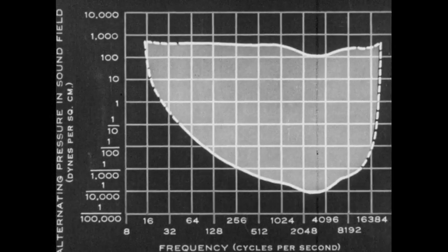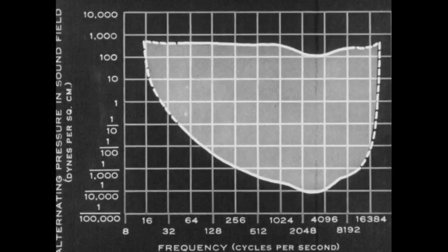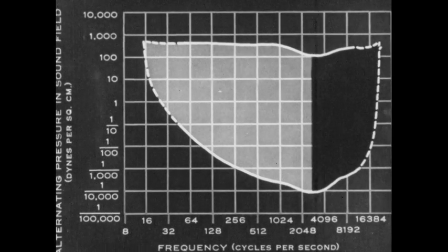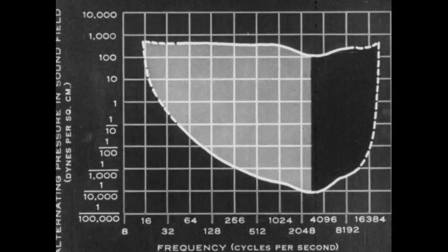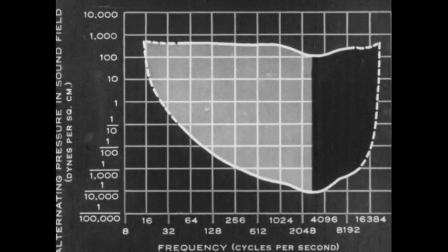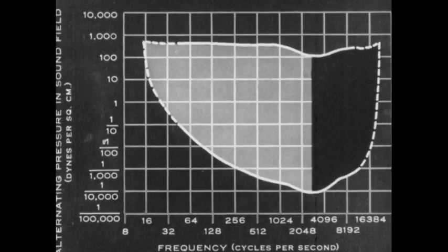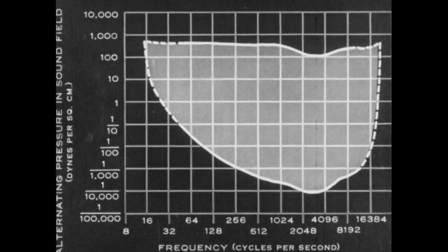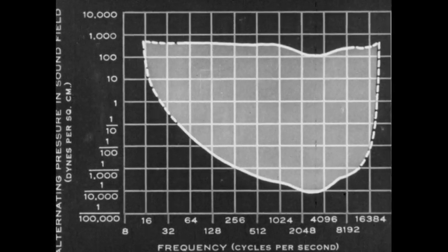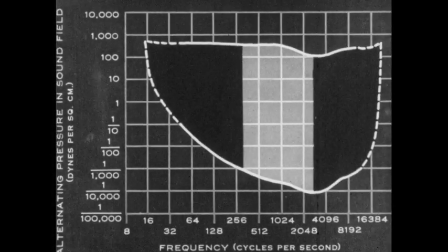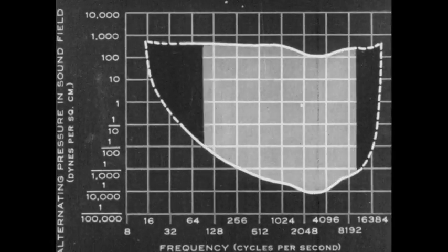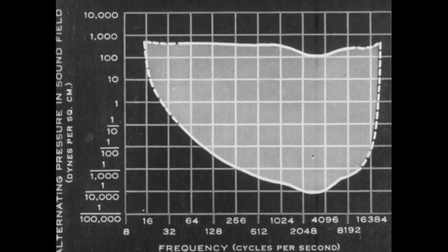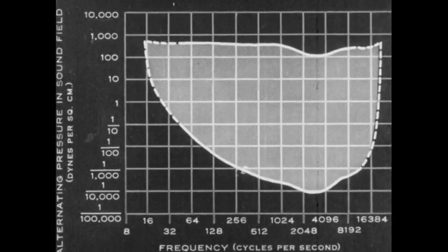Next, I will eliminate the frequencies that lie above 3000. Again, you notice a change in the quality of my voice, especially in the consonants. Now I will eliminate the low and high frequencies at the same time. In this case, both the vowel and consonant sounds are affected. Note the effect of eliminating the extreme frequencies in the reproduction of music.